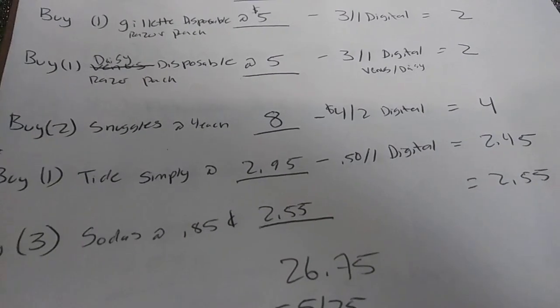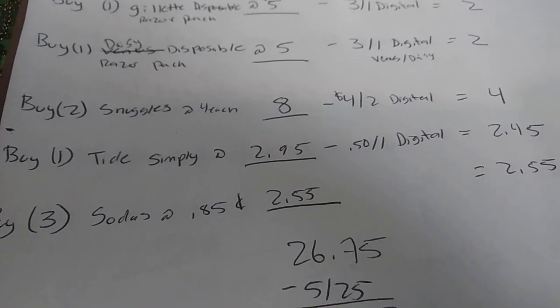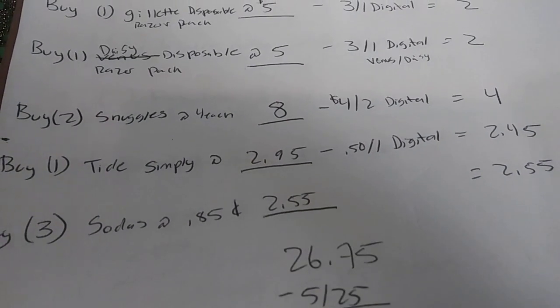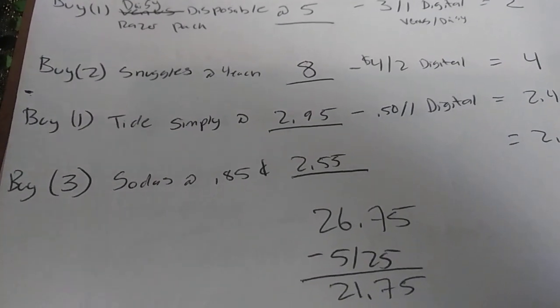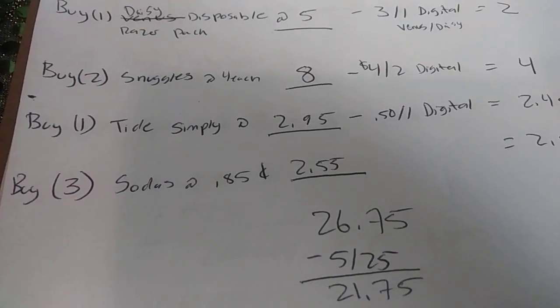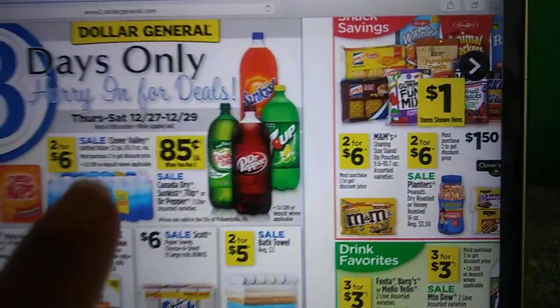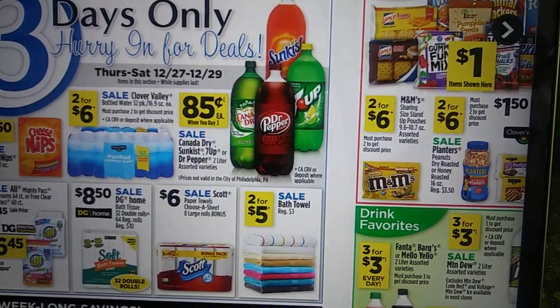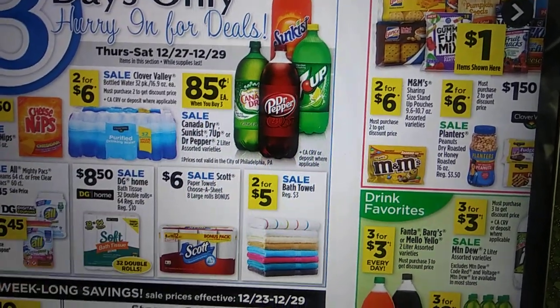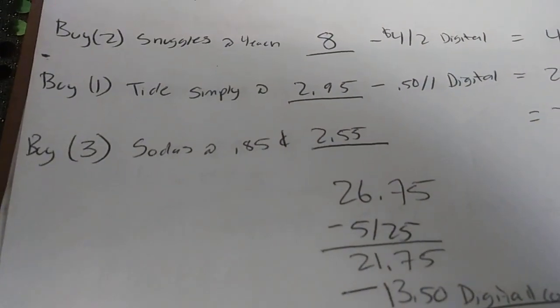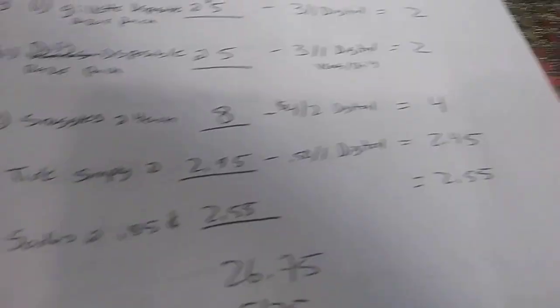Next you would want to grab one Tide Simply at $2.95. There is a 50 cent off one digital coupon. And then last you'd want to grab three sodas at $0.85. There are a few different ones included this week. So you have Canada Dry, there's some Dr. Pepper, Sunkist, all that good stuff. So you have to buy three of them to get them at $0.85 each. So go ahead and grab three. That comes to $2.55, no coupons for that.